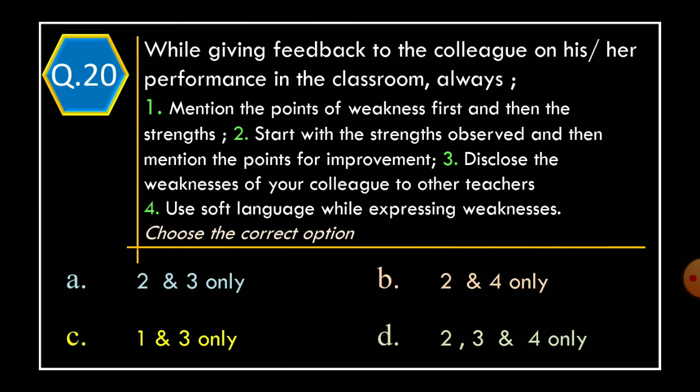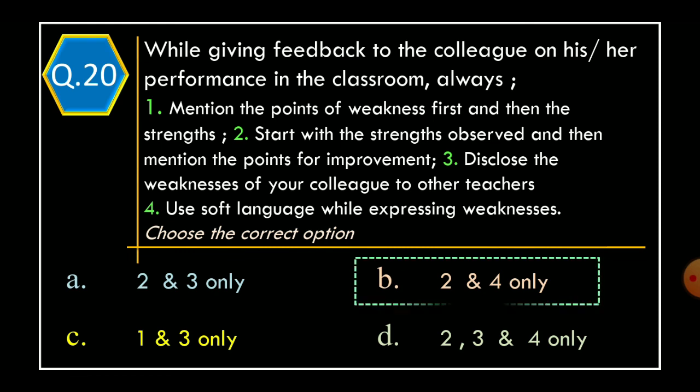Question 20: While giving feedback to a colleague on his or her performance in the classroom, always — Statement 1: mention the points of weakness first and then the strengths; Statement 2: start with the strengths observed and then mention the points for improvement; Statement 3: disclose the weakness of your colleague to other teachers; Statement 4: use soft language while expressing weaknesses. Options: Option A: Statements 2 and 3 only; Option B: Statements 2 and 4 only; Option C: Statements 1 and 3 only; Option D: Statements 2, 3, and 4 only. The correct option is Option B: Statements 2 and 4 only.